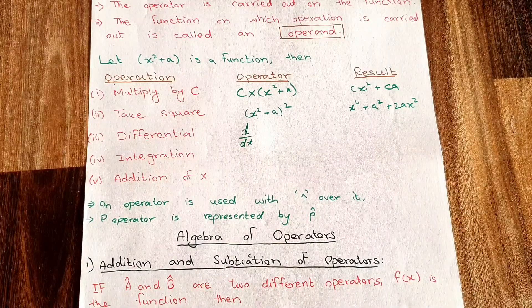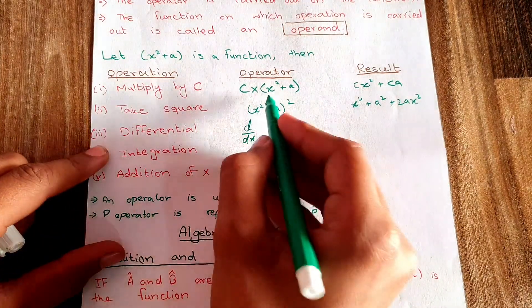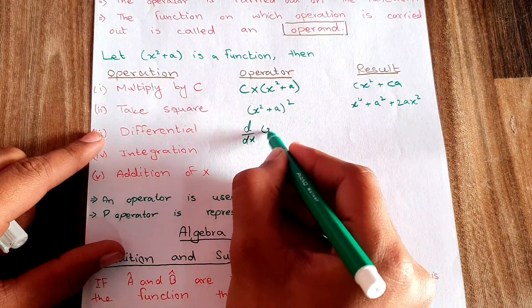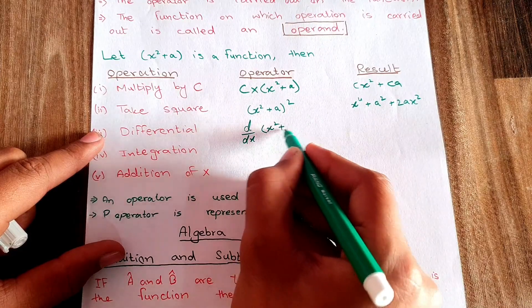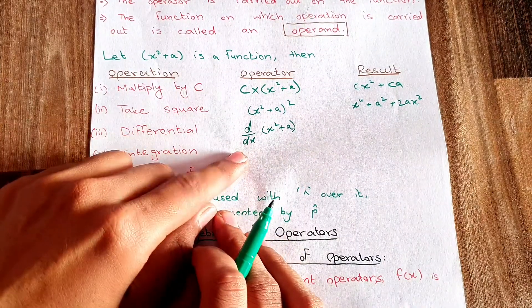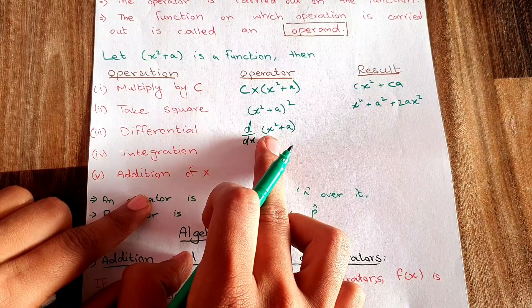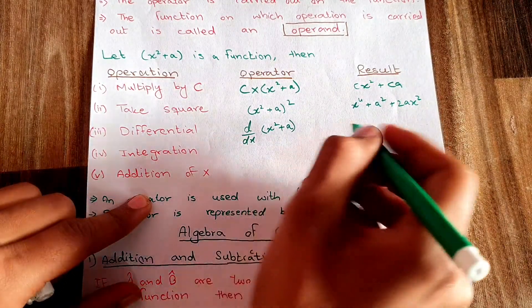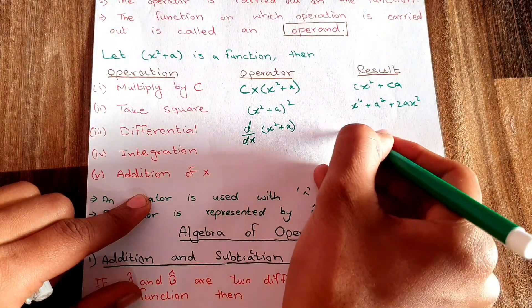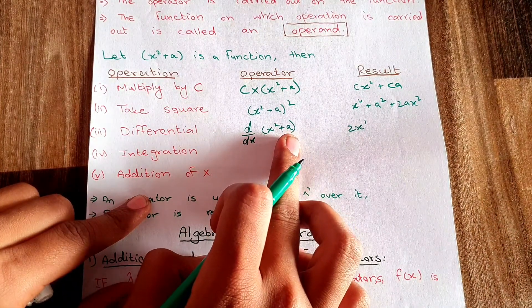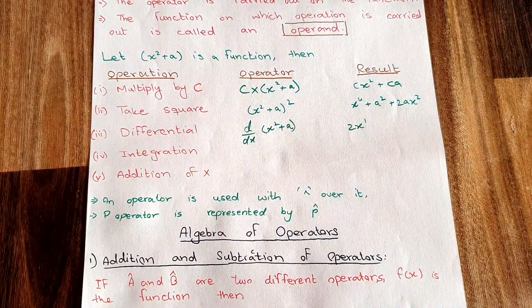The next operator to apply is the differential. The differential operator is d/dx, and my function is x² + a. If I apply d/dx on x² + a, the differentiation of x² is 2x, and the differentiation of a is 0, since a is a constant.